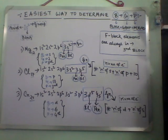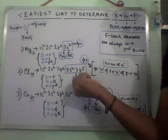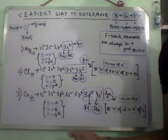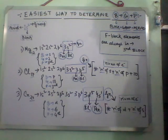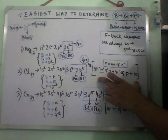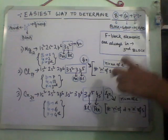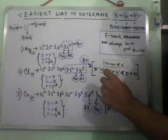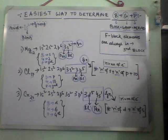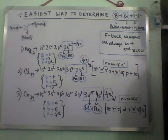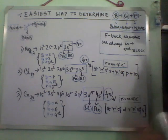The block is p and the period is 3 — the BGP. Block is p, group is 17, and period is third. Remember this trick to find the group: electrons of s plus electrons of p plus 10. By this you can determine the group — mind this.